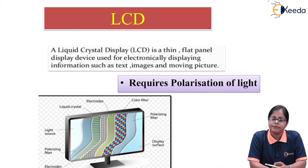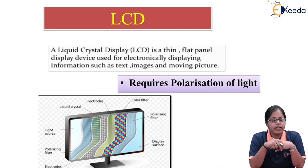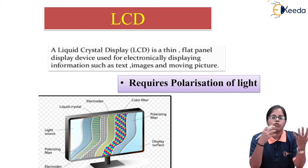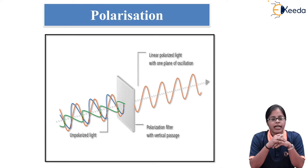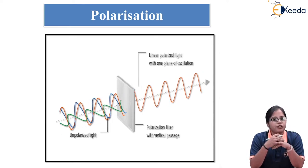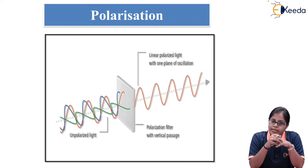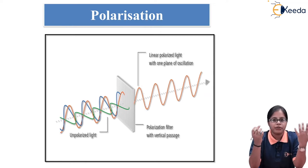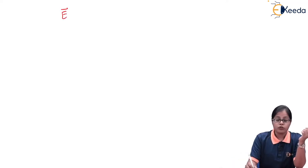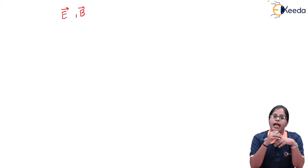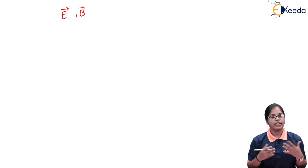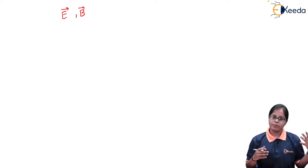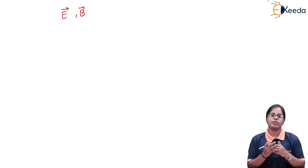When you say electromagnetic wave, it is going to consist of an electric field vector (E vector) and a magnetic field vector (B vector). These two vectors are perpendicular to each other, and they are also perpendicular to the direction of propagation of the wave. So light as an electromagnetic wave consists of E vector, B vector, and the direction of propagation — all mutually perpendicular.